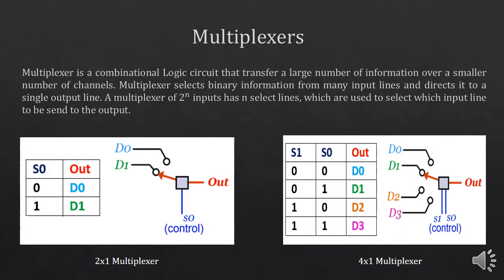A multiplexer is a combinational logic circuit that transfers a large number of information over a smaller number of channels. Multiplexers select binary information from many input lines and direct it to a single output line. A multiplexer of 2^n inputs has n select lines which are used to select the data to be sent to the output.